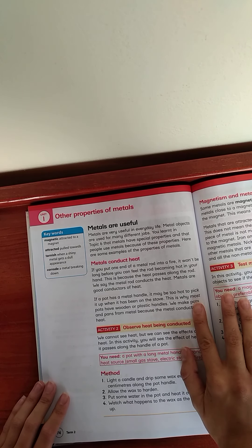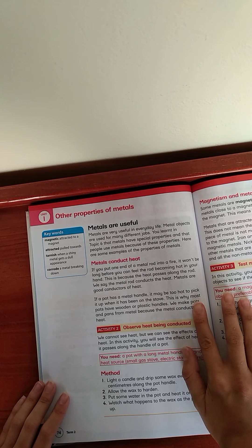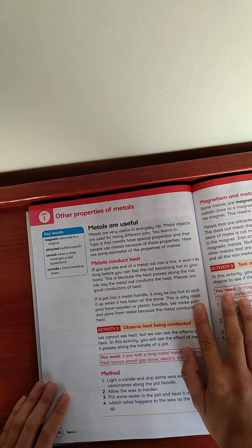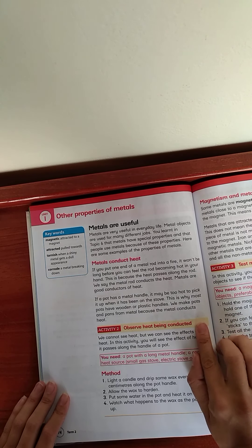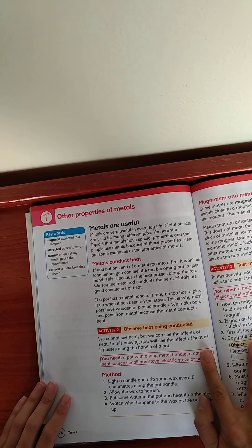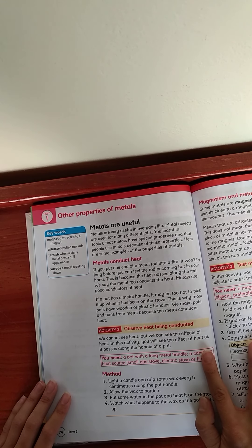If you put one end of the metal rod into a fire, it won't be long before you can feel the rod becoming hot in your hand. This is because the heat passes along the rod. We say the metal rod conducts the heat. Metals are good conductors of heat.